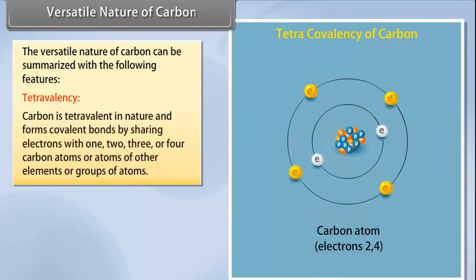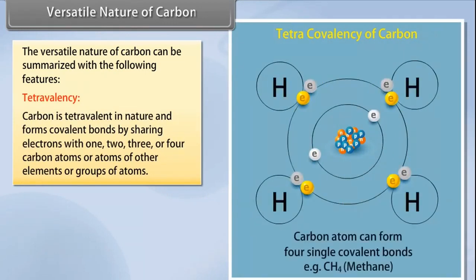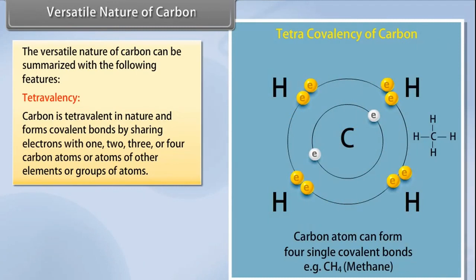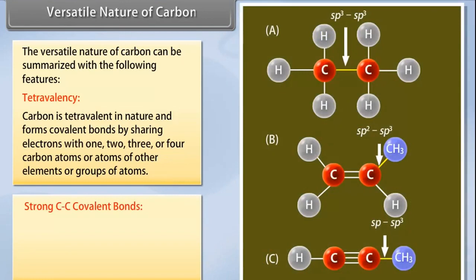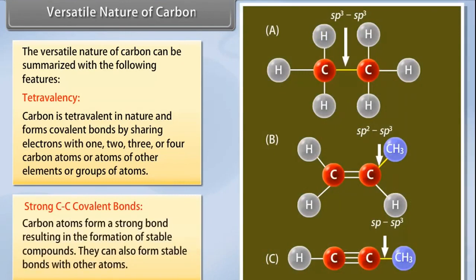Tetravalency: Carbon is tetravalent in nature. It always forms covalent bonds by sharing electrons with 1, 2, 3, or 4 carbon atoms or atoms of other elements or groups of atoms. Strong carbon-carbon covalent bonds: Carbon atoms form a strong bond resulting in the formation of stable compounds. Carbon atoms can also form stable bonds with other atoms.